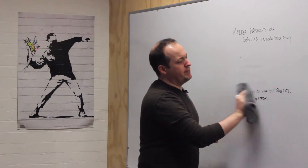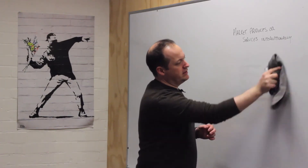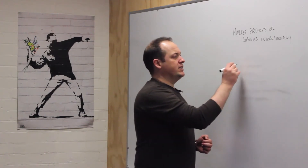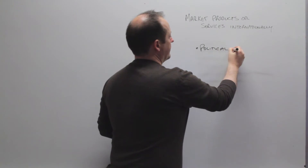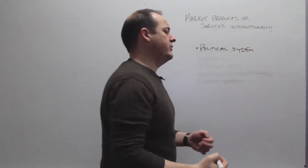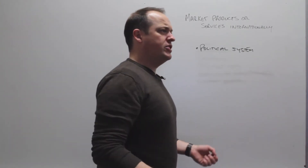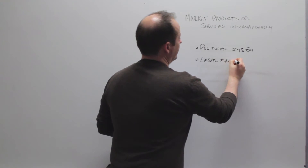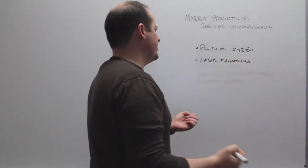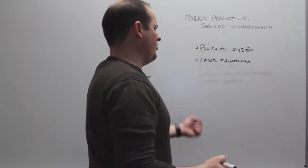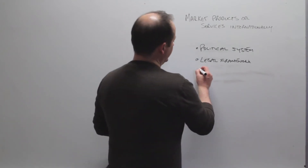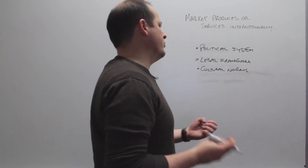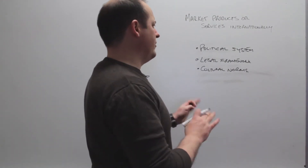We need to think about PEST and STEEP analysis. First, understanding the political system — how does the country operate, who's in charge, what does that mean for taxes? Leading into the legal framework: is it positive or negative for your trade, how is it going to affect you? Places like Austrade can be really handy here. We also need to think about cultural norms — what's the culture in that country, is it similar or different to ours, how are they going to adapt to and react to our product?